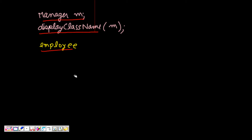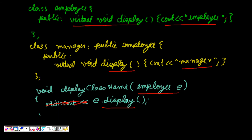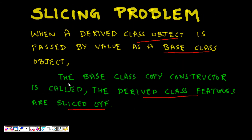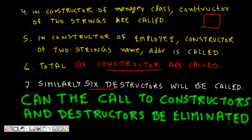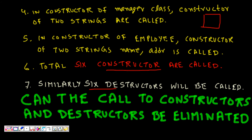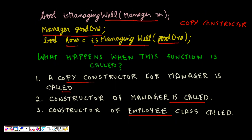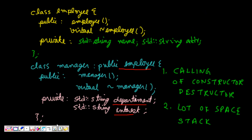To summarize, the problems with passing by value in C++ are: first, a lot of memory is required on the stack; second, a lot of constructors and destructors are called; and third, there is the slicing problem. Hence it is better to pass by reference, and it should be a const reference so that the object cannot be changed. I hope you understand the problem and its solution.